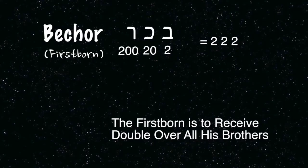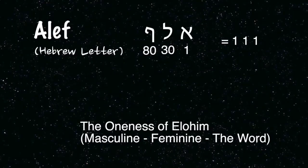You go to Bechor. Bechor in English is firstborn. According to Jewish tradition, the firstborn gets double of all his brothers and sisters. This was told, I think, by the Gaon of Vilna — it's not originally mine — that Bechor: you add Bet, Kaf, Resh, the three letters, root of the word Bechor, it comes up to 222. Two, double — it shows in the word. And of course Aluf — Alef, Lamed, Pe — which represents God many times, you combine the letters and it comes up to one, one, one — the oneness of God.